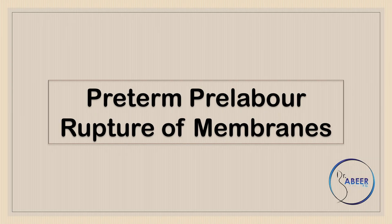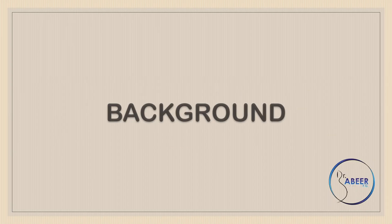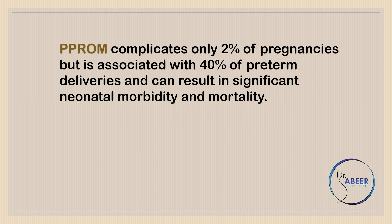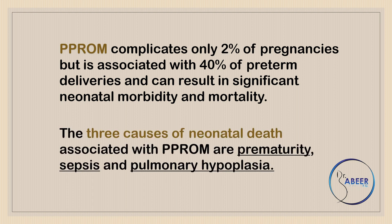Preterm prelabor rupture of membranes, or PPROM, complicates only 2% of pregnancies but is associated with 40% of preterm deliveries and can result in significant neonatal morbidity and mortality. The three causes of neonatal death associated with PPROM are prematurity, sepsis, and pulmonary hypoplasia.